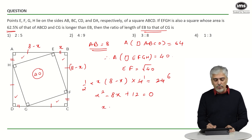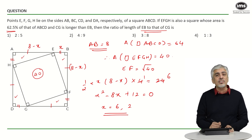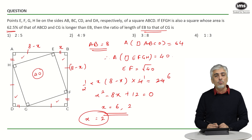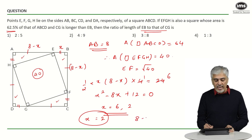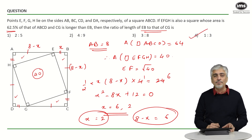Solving the quadratic equation, x equals 6 or 2. From the diagram, x cannot be 6 because they told us BE is smaller than CG. Therefore x equals 2, and 8 minus x equals 6. We want the ratio EB to CG, which is 2 to 6, which is 1 to 3 — that is the fourth option.